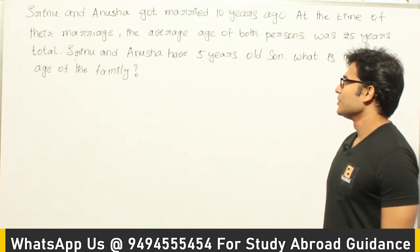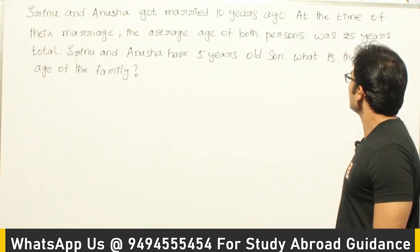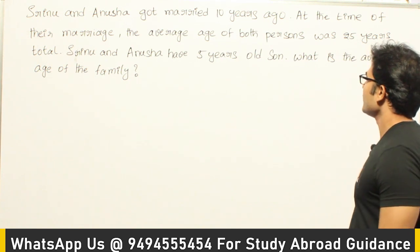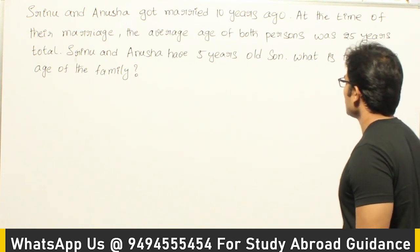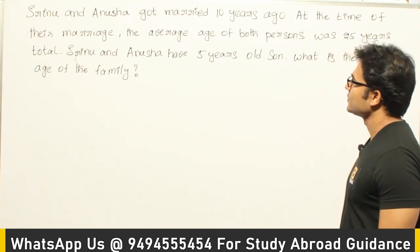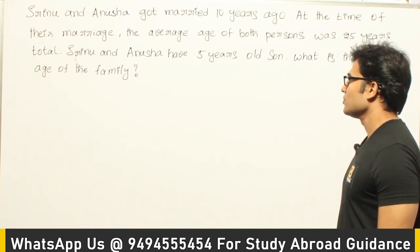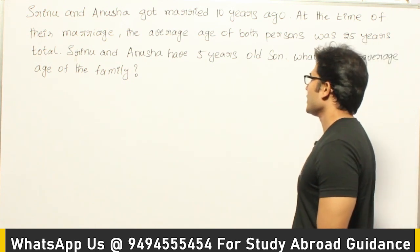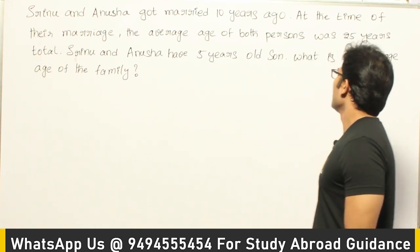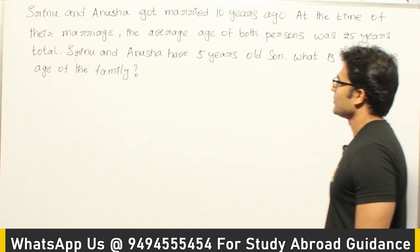Srinu and Anusha got married 10 years ago. At the time of their marriage, the average age of both persons was 25 years. Srinu and Anusha have a 5-year-old son. What is the average age of the family?